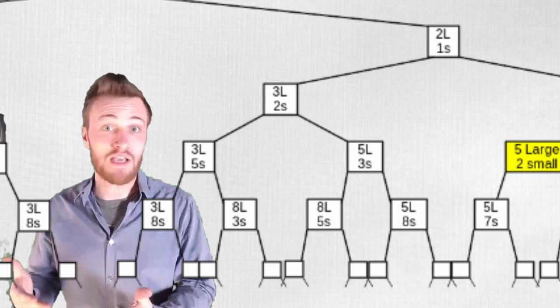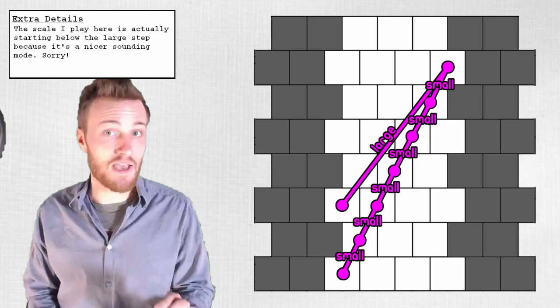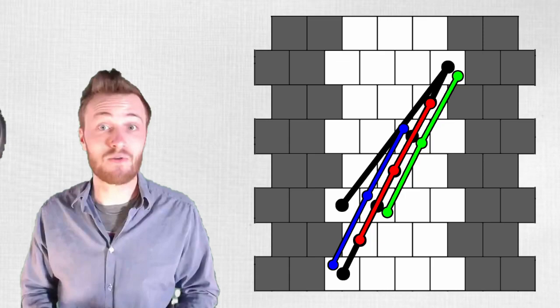For example, consider a scale with only one large step and six small steps. With a small step size of around 160 cents, or 1.6 semitones, we end up with a seven note scale containing two major chords, two minor chords, and three diminished chords. We also end up with some intervals that are pretty far from anything we have access to in standard Western tuning.